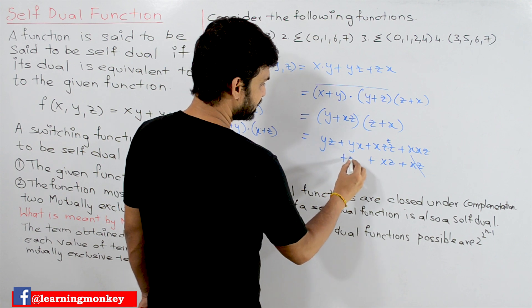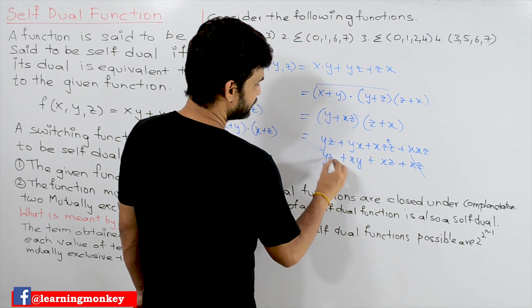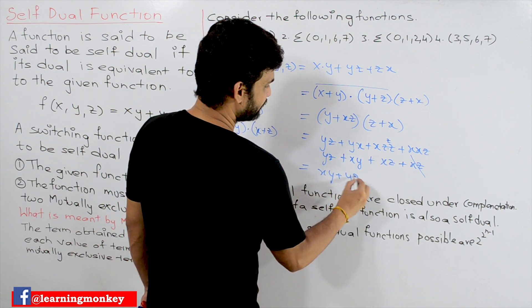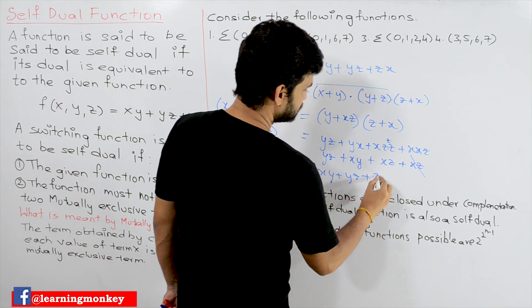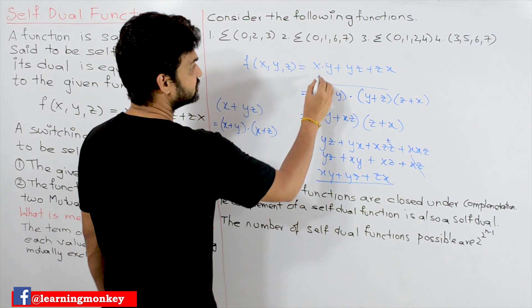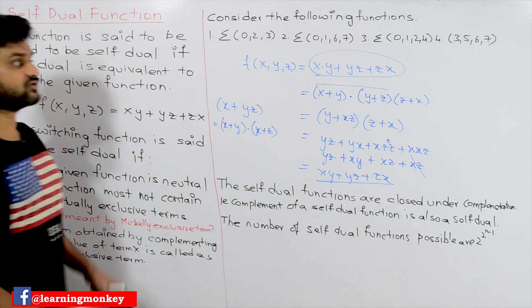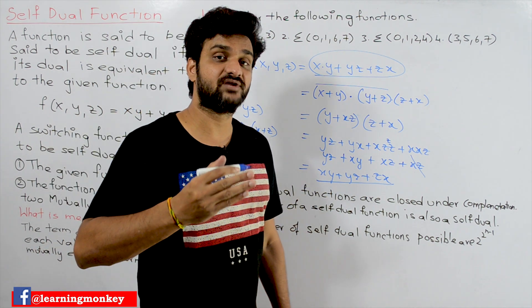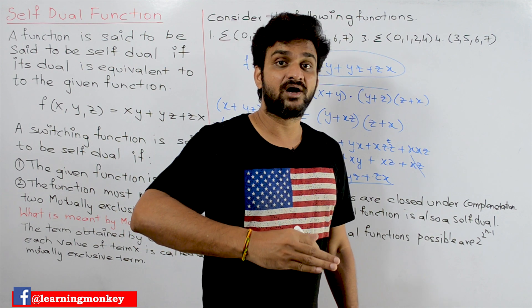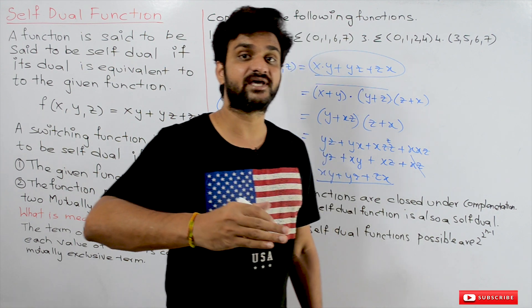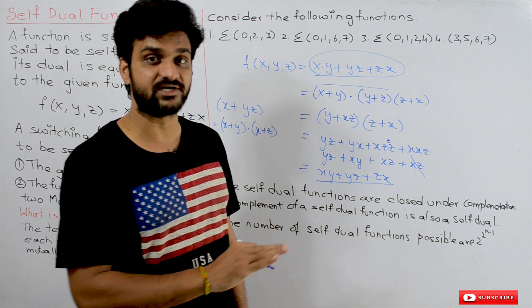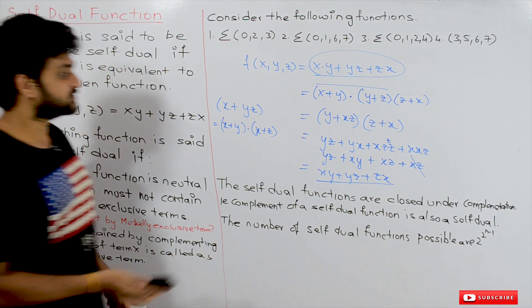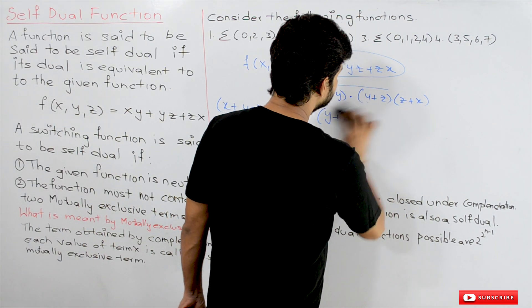Rewriting this equation, it is xy + yz + zx, which is the same as the original function. So if the dual of any function can be derived back to its original function, that function is what we call a self-dual function.